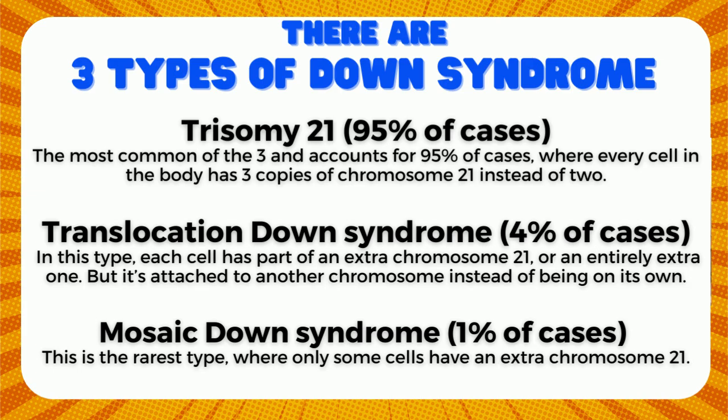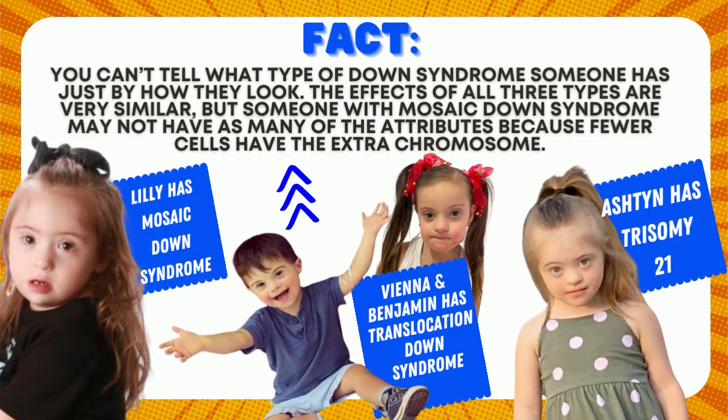The second is translocation Down syndrome, which makes up about 4% of cases. In this type, each cell has part of an extra chromosome 21 or an entirely extra one, but it is attached to another chromosome instead of being on its own. The third is mosaic Down syndrome, which makes up only 1% of cases — the rarest type, where only some cells have an extra chromosome 21. You can't tell what type of Down syndrome someone has just by how they look. The effects of all three types are very similar, but someone with mosaic Down syndrome may not have as many of the attributes because fewer cells have the extra chromosome.